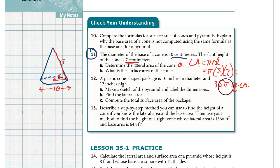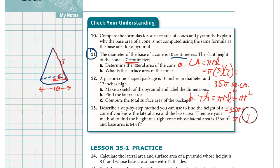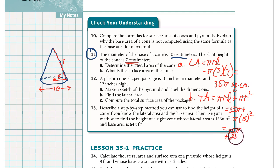If you want to substitute 3.14 for pi, you can get a single number. For question B, the total surface area formula is pi r l plus pi r squared. The pi r l is 35 pi. Now for pi r squared: r is 5, so pi times 25 equals 25 pi. Adding them together gives 35 pi plus 25 pi, which is 60 pi square centimeters.